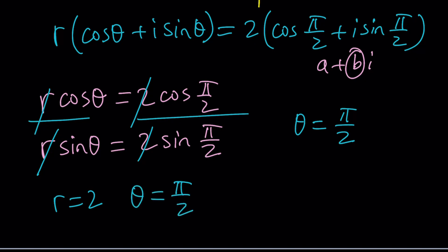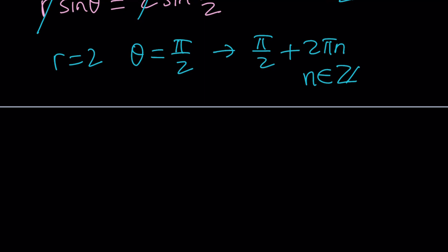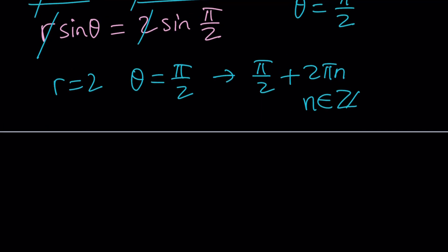But you can also write the pi over 2 as pi over 2 plus 2 pi n in the general form where n is an integer. This gives you the multi-valued result, so you're going to get multiple values. So those are going to be the solutions for the first method. Let's go and take a look at it from a second perspective.